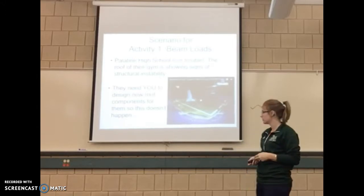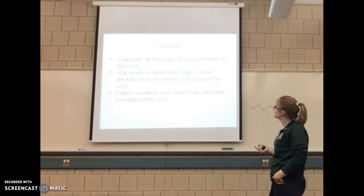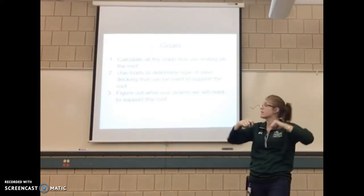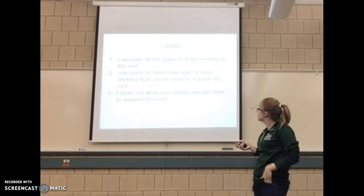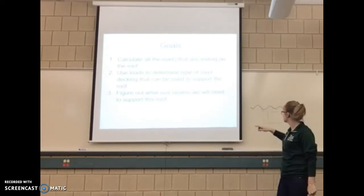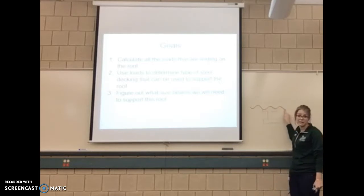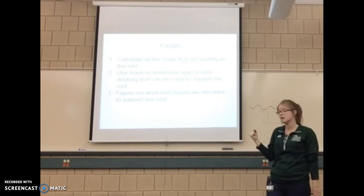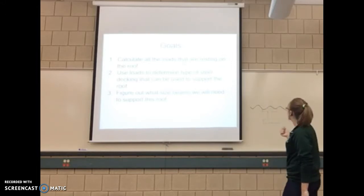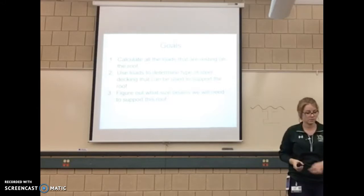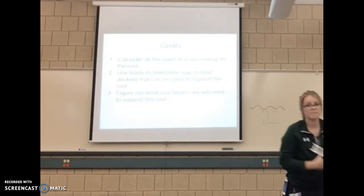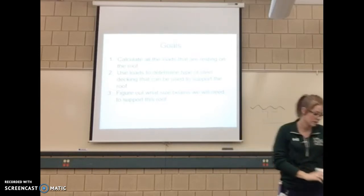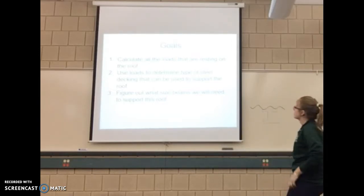There are three things we need to calculate: first, the loads — what weight is resting on that roof; second, the steel decking — how thick that corrugated decking needs to be and how strong it is; and third, what size I-beams are needed to support that load. That's our three-step process.